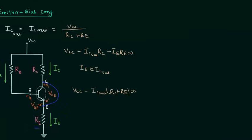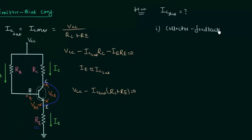There is one homework problem: find the saturation condition IC_sat for the collector feedback bias configuration and for the voltage divider bias configuration. Once you have your answers, post them in the comment section. I will end this lecture here — see you in the next one.